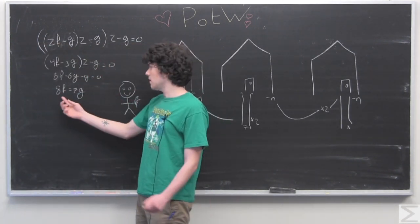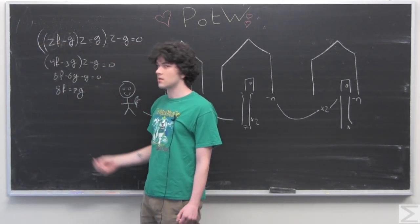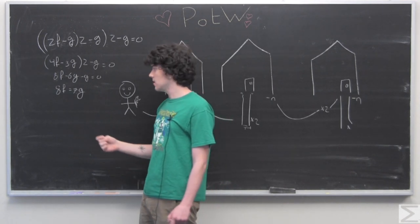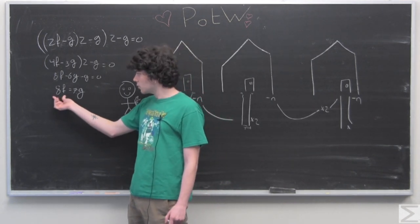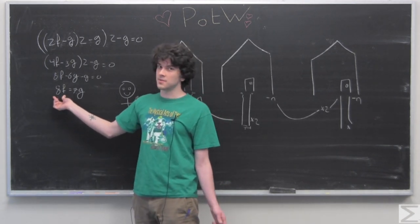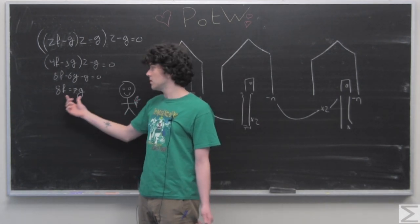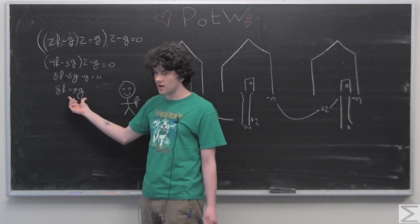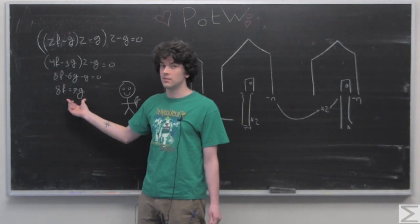So now we have 8f equals 7g. All that really tells us is that 8 times the number of flowers that we start with is going to be equal to 7 times the number that we give to each house.